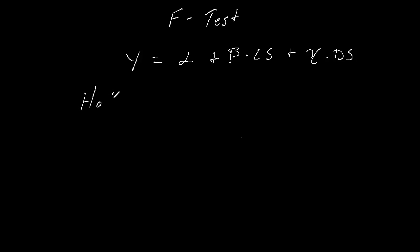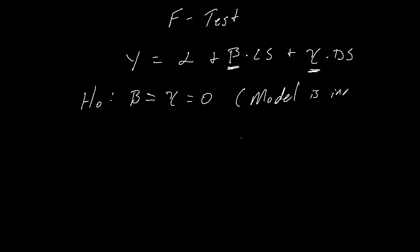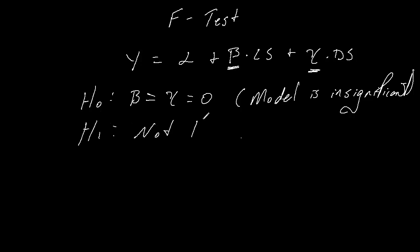We start with the regression equation and first state our null and alternative hypotheses. Our null hypothesis for the F-test is that the coefficients of our explanatory variables — beta and gamma — are both equal to zero. Note that alpha doesn't count, as it is simply the constant. If beta equals gamma equals zero, it means both explanatory variables are simultaneously not explaining the model. Our alternative hypothesis says not H0, meaning the model is significant.